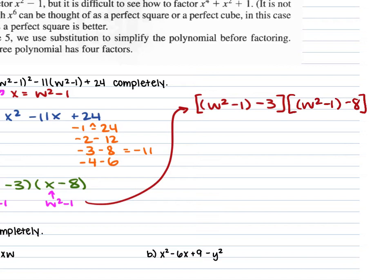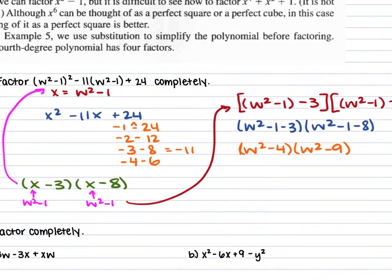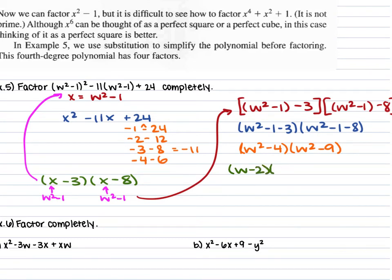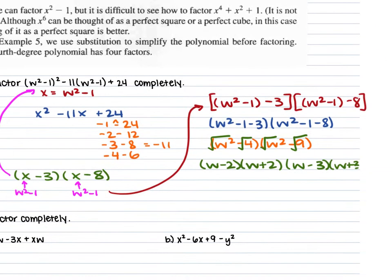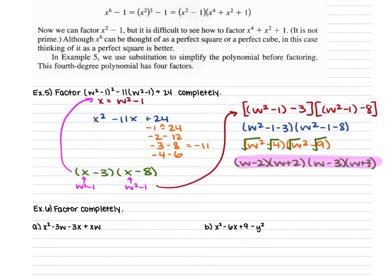From there, we remove the parentheses and combine like terms: w squared minus 4 times w squared minus 9. Both of these are differences of squares. So this factors further to w minus 2 times w plus 2 times w minus 3 times w plus 3. The key strategy is to substitute x for w squared minus 1, factor, then replace x back with w squared minus 1, and continue factoring completely.